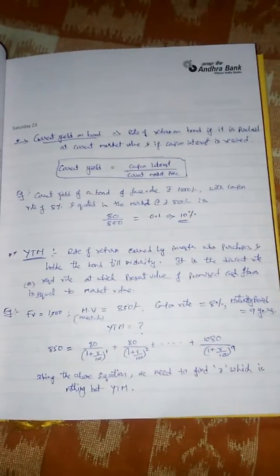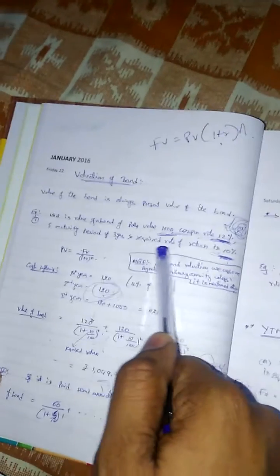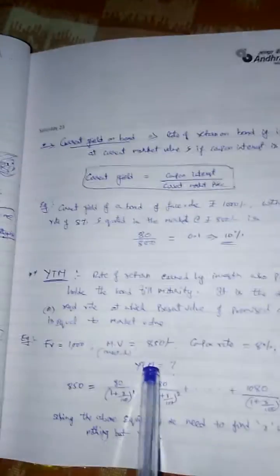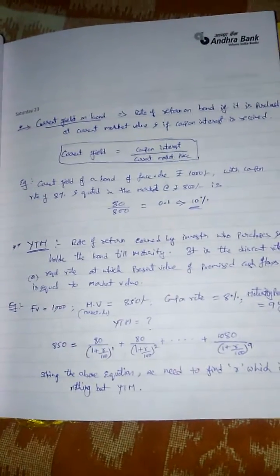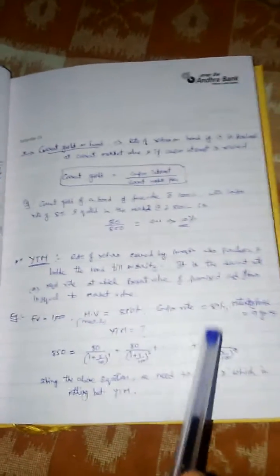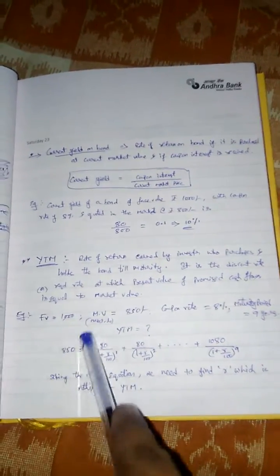YTM — yield to maturity — is a very important topic in bond valuation. YTM is the rate of return earned by an investor who holds the bond till maturity. In our earlier example, the bond maturity period is three years, so if I purchase this bond and hold it till the end of three years, the return I get is the YTM. So YTM is the rate of return, expressed as a percentage, which a bondholder gets if they hold the bond till maturity.